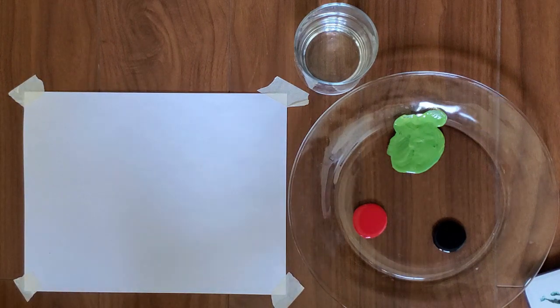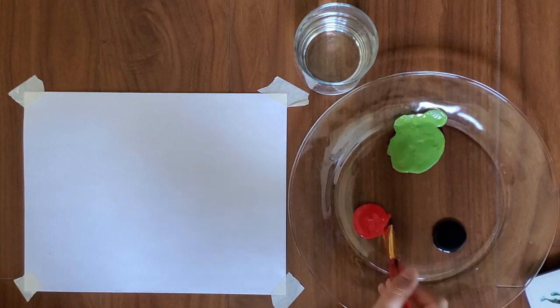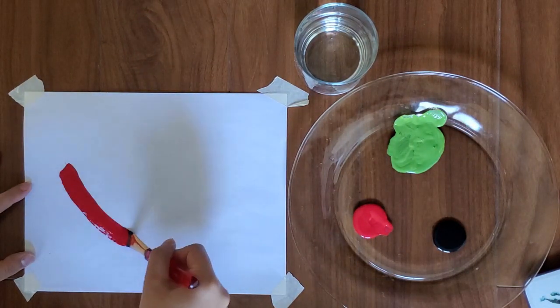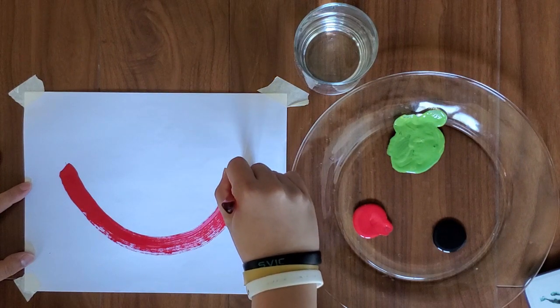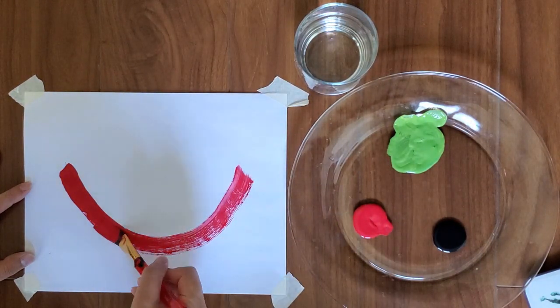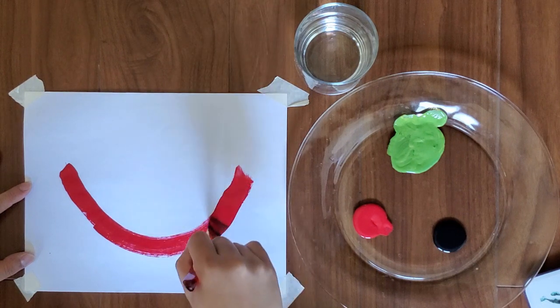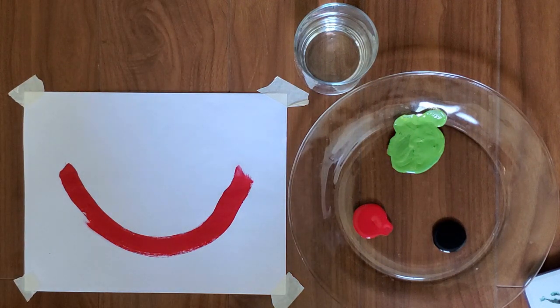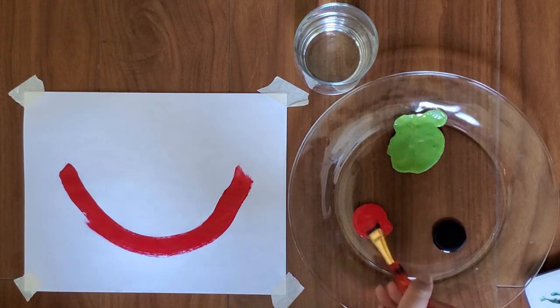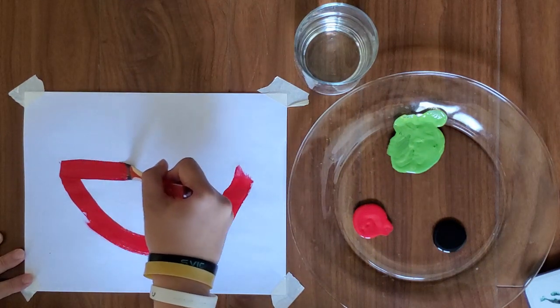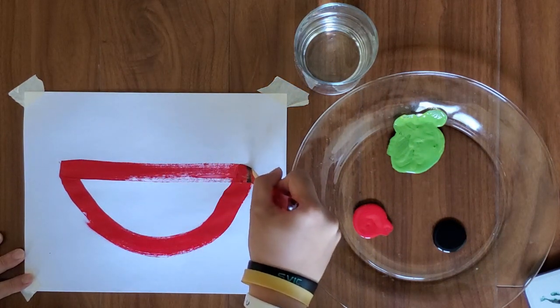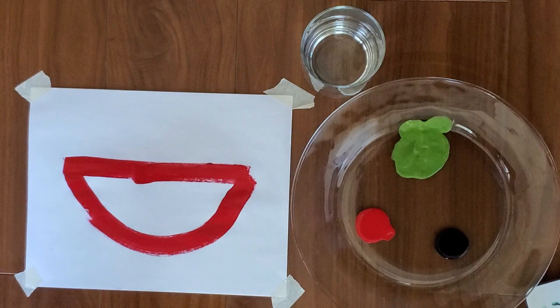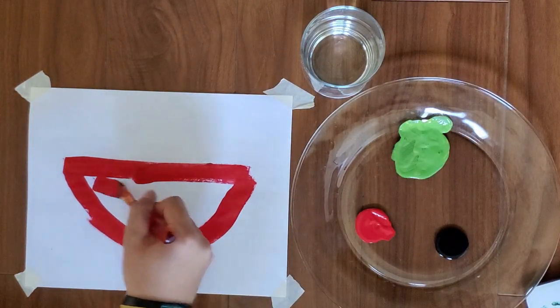First we're going to take the red and make a big giant U. Next we're going to draw a top for the U right across. Now we're going to color in with red.